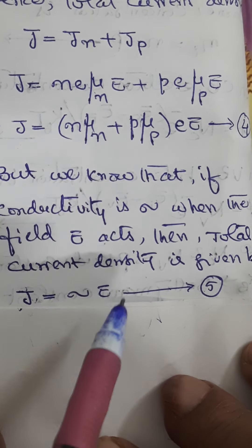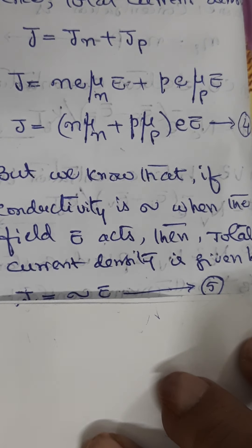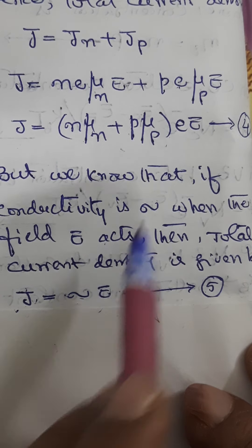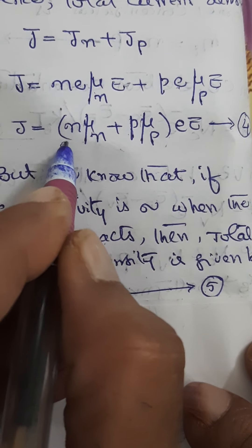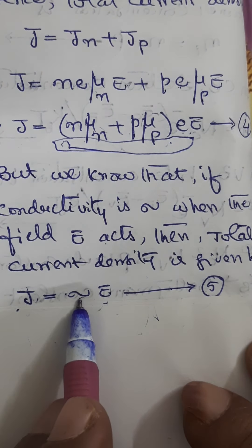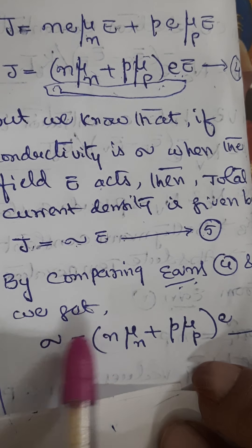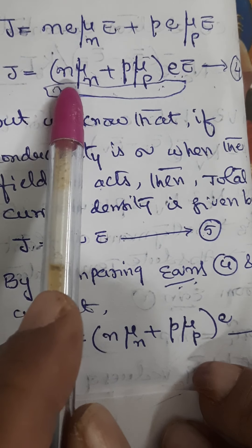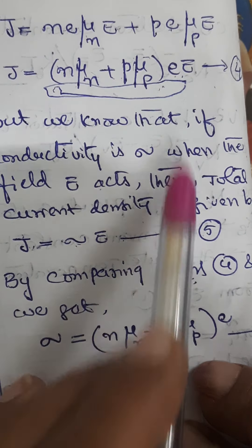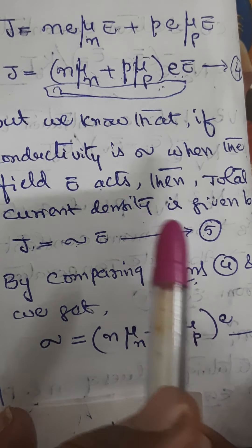Comparing equations 4 and 5: since both equal j, their right-hand sides must be equal. So sigma·E = (n·mu_n + p·mu_p)·e·E. Cancelling the common factor E from both sides, we get sigma = (n·mu_n + p·mu_p)·e. This is the expression for electrical conductivity.